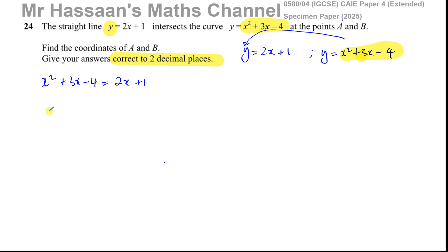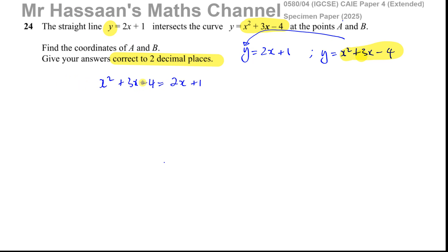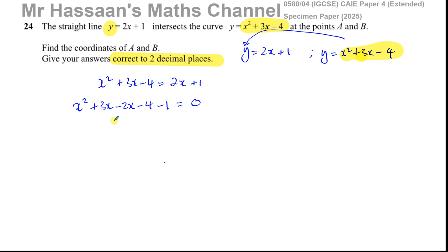Now we solve this quadratic equation. First, make it equal to zero. We have x squared plus 3x minus 4 equals 2x plus 1. Subtract 2x and subtract 1 from both sides. This gives x squared plus x minus 5 equals 0.